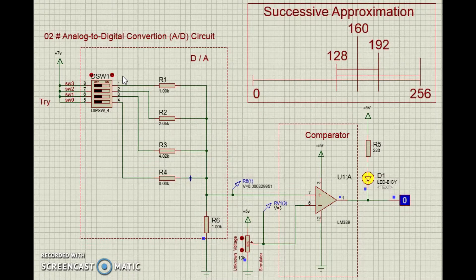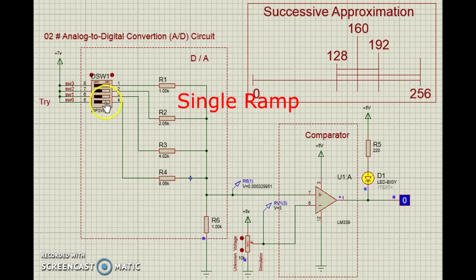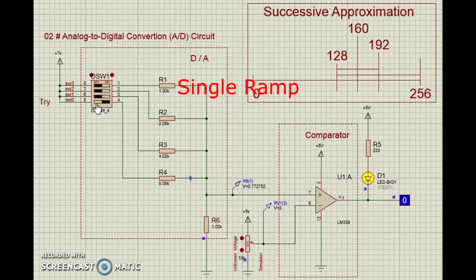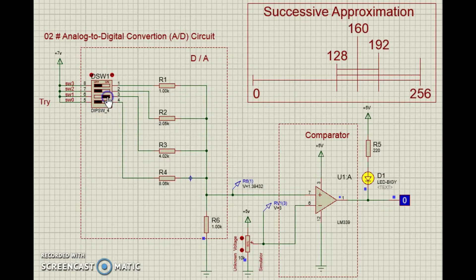The simplest algorithm is called a single ramp. The guess is incremented by one repeatedly until it reaches the value of the unknown voltage. This is simple, but not very efficient.